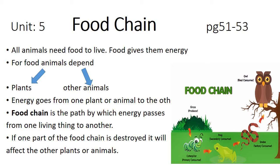If one part of the food chain is destroyed, it will affect the other parts. Looking at the diagram, the food chain is basically a pathway in which energy from one thing is transferred to another, then to a third, then to a fourth, and finally to a fifth organism, and the cycle continues.